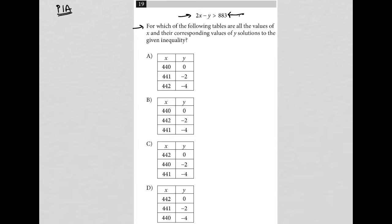So let's test that. It looks like each of our tables have x values of 440, 441, and 442. So we want to know what's happening when x is 440, when x is 441, and when x is 442. Those are our only three options for x. Let's see what happens.